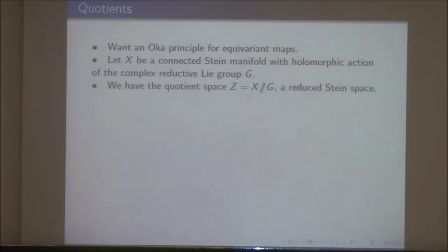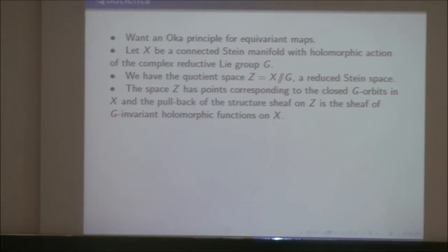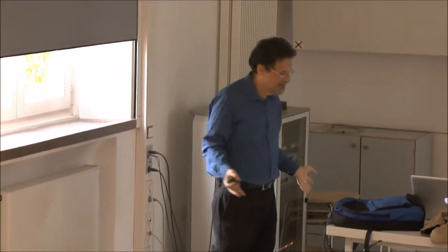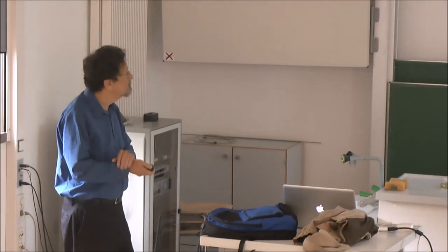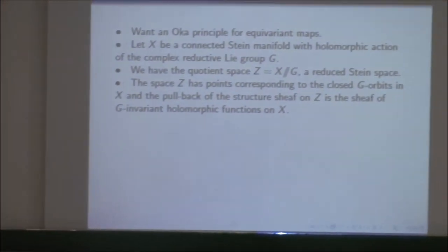We have the quotient space, which I denote X double slash G — this is a reduced Stein space. The space Z has points corresponding to the closed G-orbits in X. A big problem when you have a group action is non-closed orbits; if one orbit has another orbit in its closure, it ruins the Hausdorff property. So the quotient is defined by taking closed orbits.